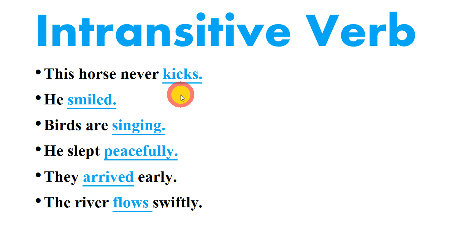Let's look at these sentences: this horse never kicks — the verb 'kicks' has been used intransitively here; he smiled; birds are singing; he slept peacefully; they arrived early; the river flows swiftly. So these are examples of the intransitive verb.